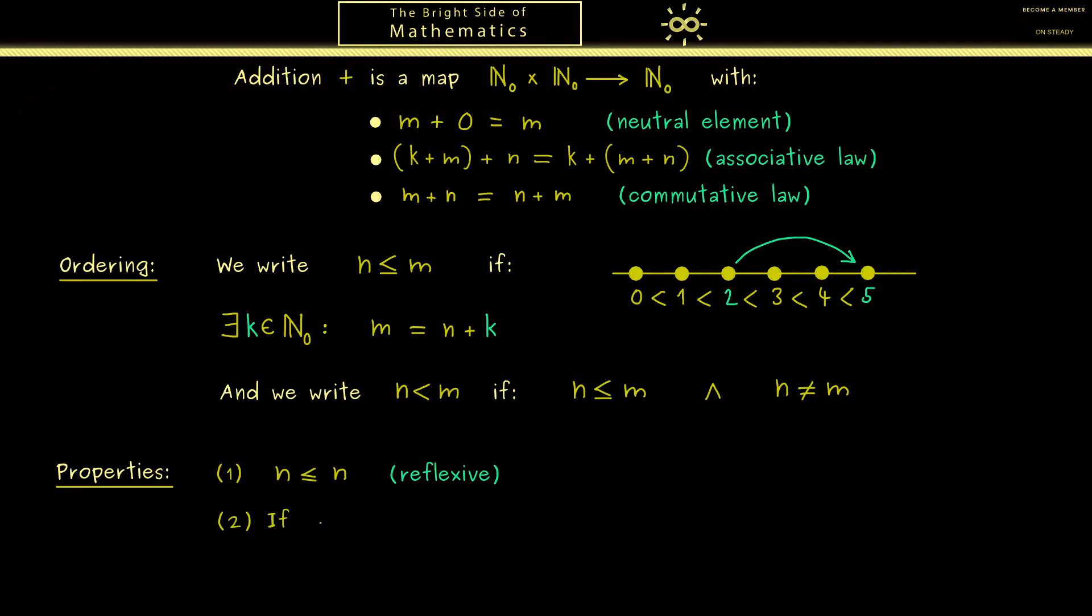Now the second property should tell you what happens when we have the order in both directions. So when we have that n is less or equal than m but also greater or equal, written as that, then the only possibility should be they are indeed the same. This property is usually called anti-symmetric, which just means if we have two different elements, only one of the two orders can happen.